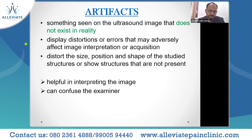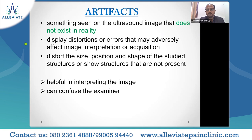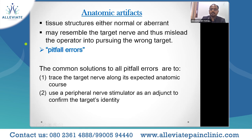Artifacts: something seen on the ultrasound image that doesn't exist in reality. They are display distortions or errors that may adversely affect image interpretation or acquisition — and some are user-dependent, meaning the scanning clinician is responsible for certain artifacts. Anatomical artifacts: nearby structures, either normal or aberrant, may resemble the target nerve and mislead the operator. Solutions include tracing the target nerve along its expected anatomical course or using a peripheral nerve stimulator to confirm identity.